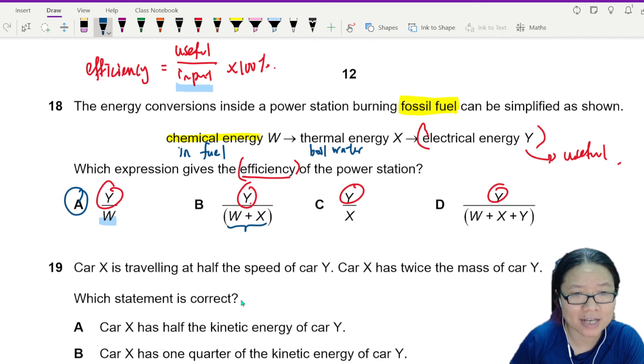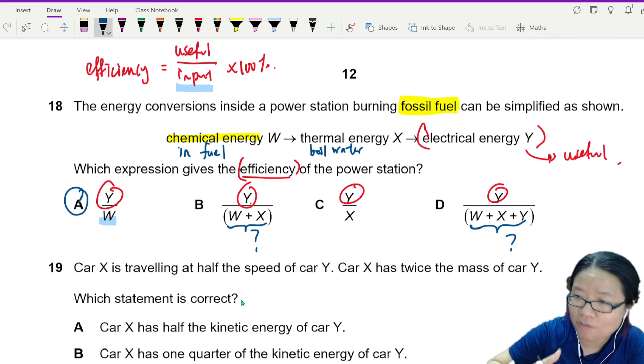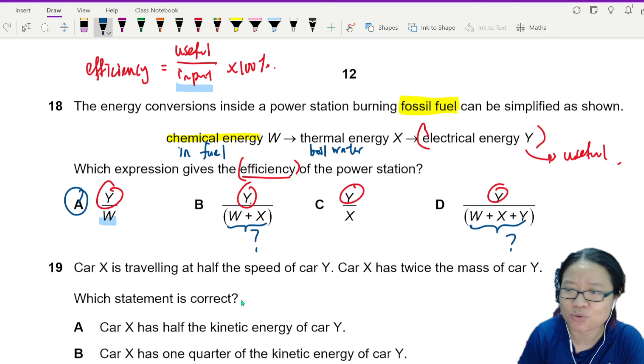This W plus X or W plus X plus Y makes no sense, because it is one convert to the other convert to the other. You add them together for what? Doesn't make any sense. Whereas Y over X can be the efficiency of the generator, but this is not the input. The beginning of the chain is your input.